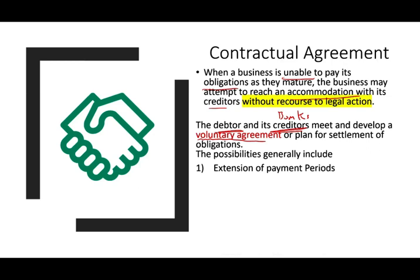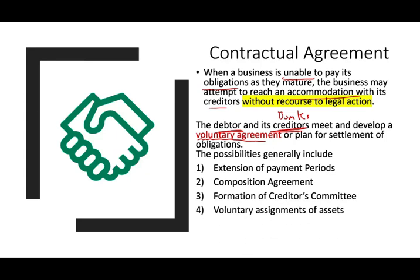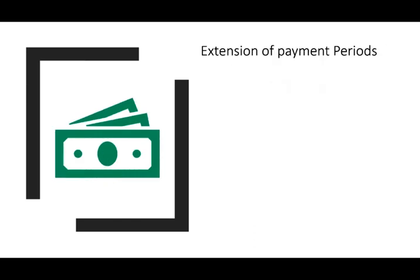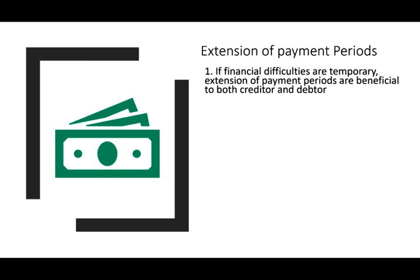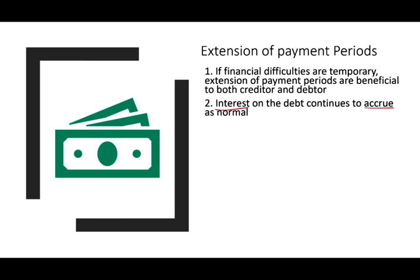The settlement options include: extension of payments, composition agreement, formation of a creditors' committee, and voluntary assignment of assets. Extension of the payment period occurs when the creditor believes it's not in their best interest to force the debtor into liquidation. If the financial difficulties are believed to be temporary, it's in the creditor's best interest to wait and extend the payment. When the payment is extended, interest on the debt continues to accrue as normal.